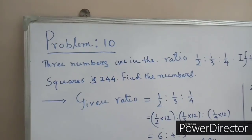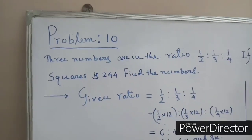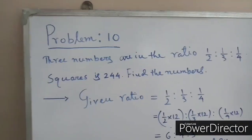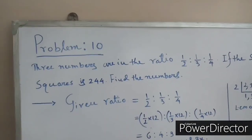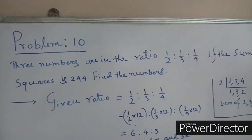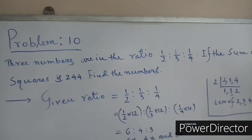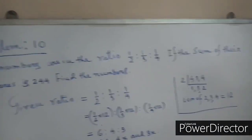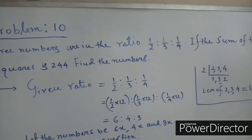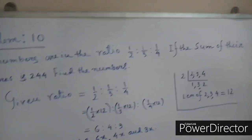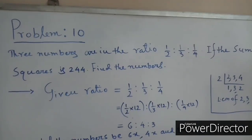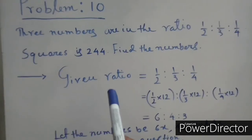Today's class is a continuation of the topic Ratio and Proportion. Problem number 10: three numbers are in the ratio 1/2 : 1/3 : 1/4. If the sum of their squares is 224, find the numbers.